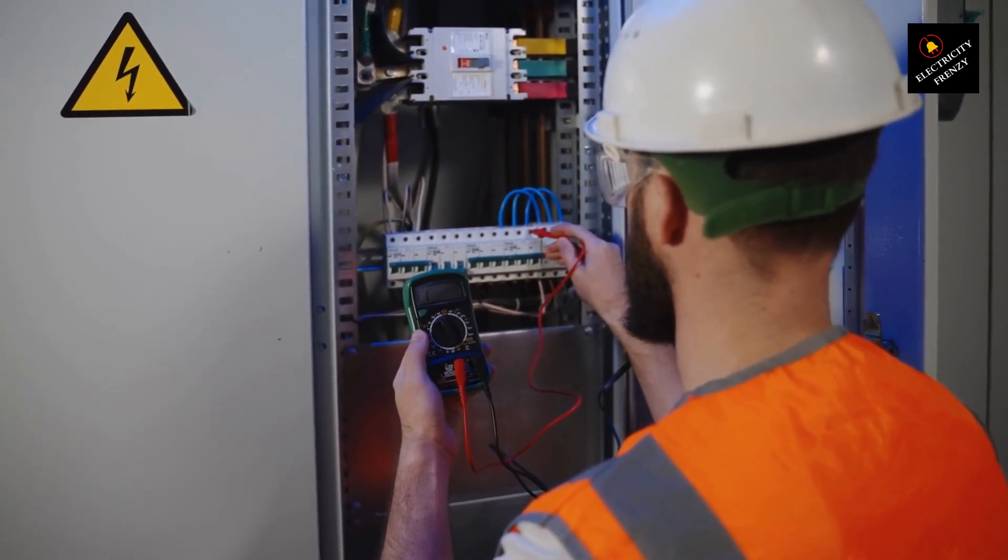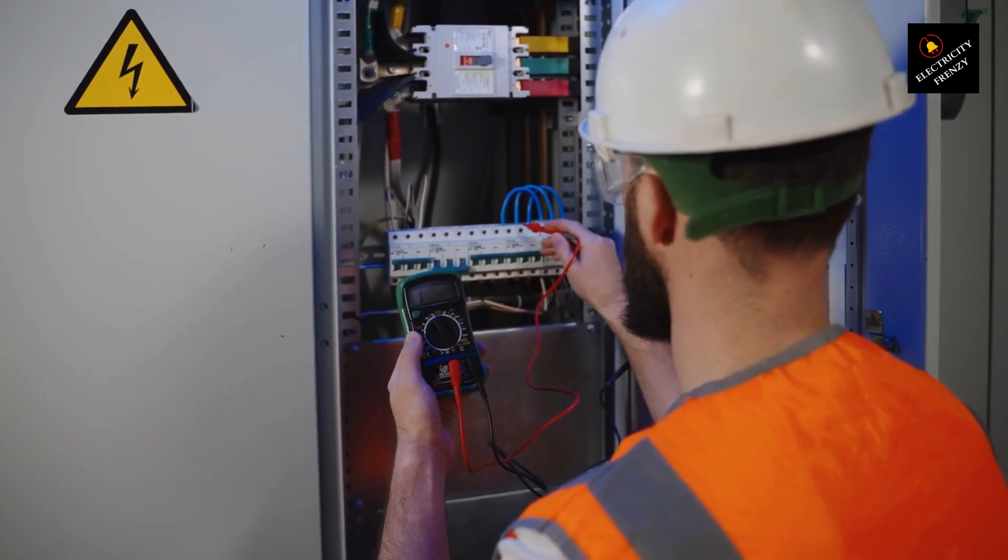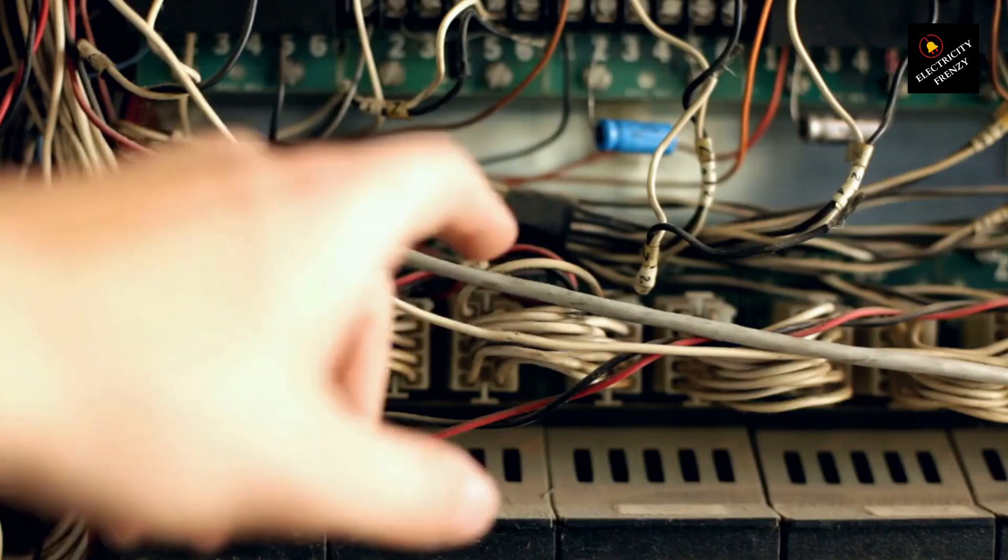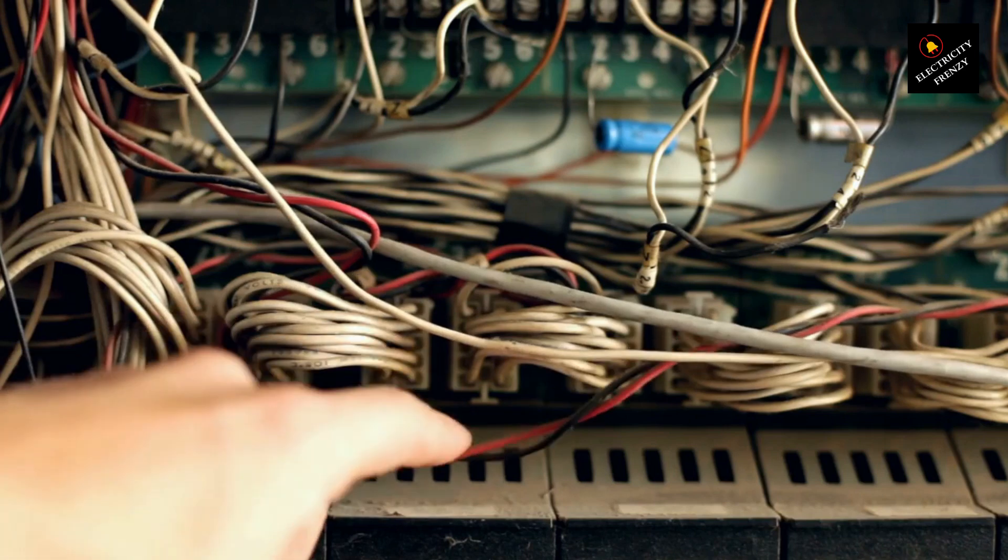Next, short circuits. This one's a bit more dangerous. A short circuit happens when the hot wire touches another wire or a ground wire, causing a sudden surge of electricity. The breaker trips immediately to stop the damage.